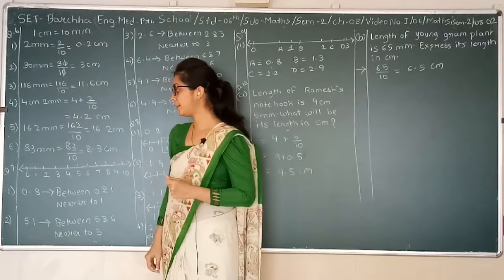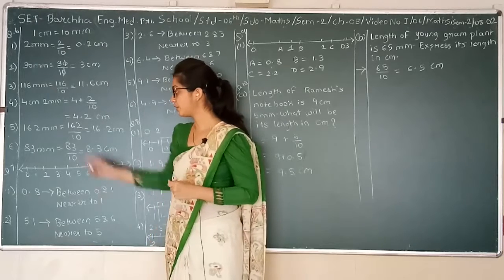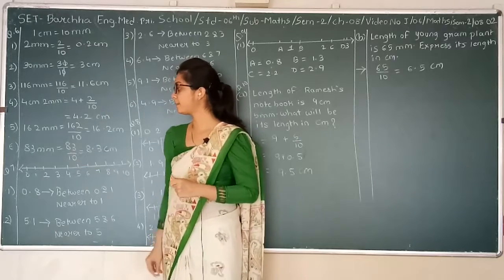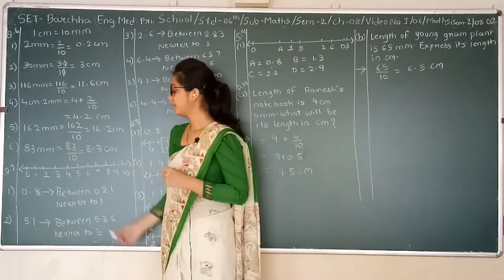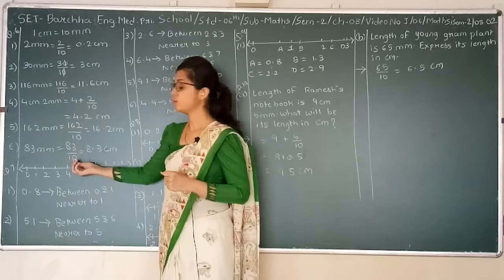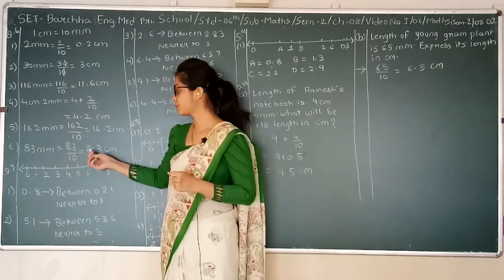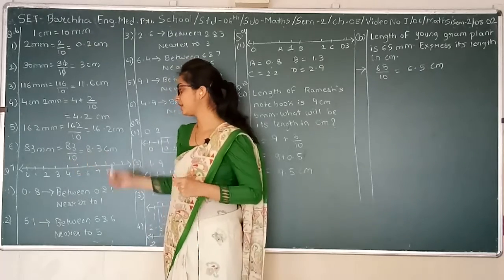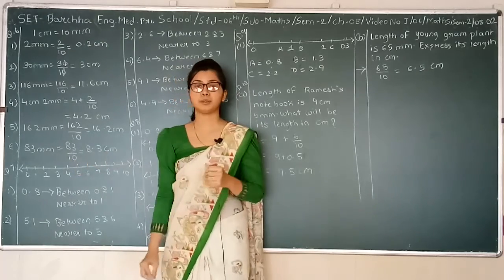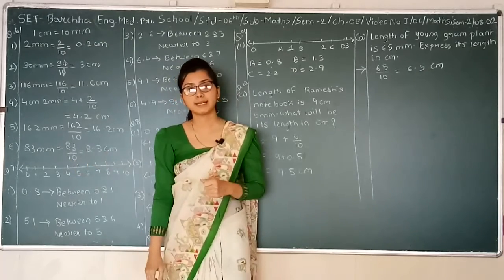Next one: 83 millimeters is equal to 83 upon 10. Now we have 1 zero, so 8.3 centimeters will be the answer.